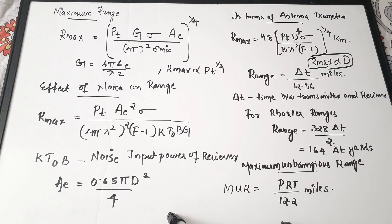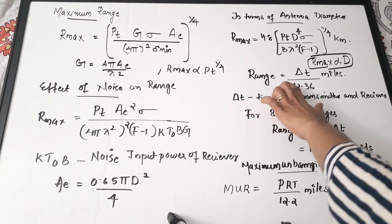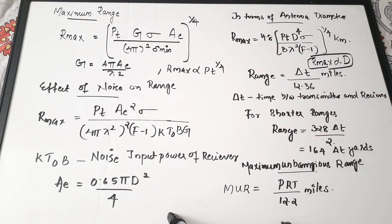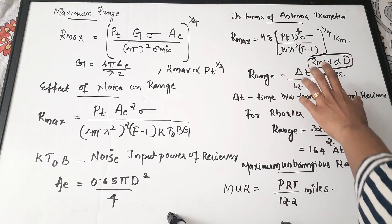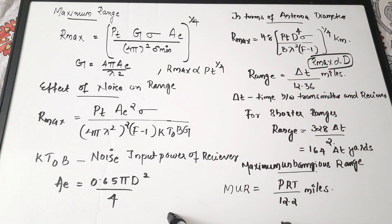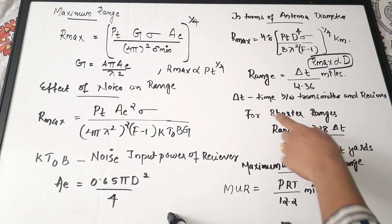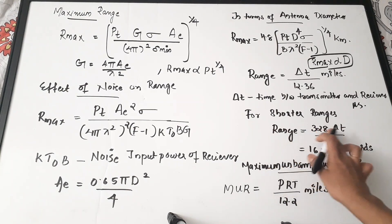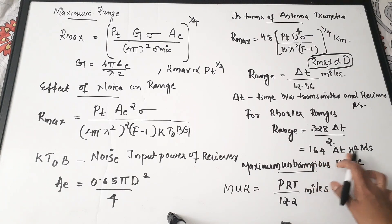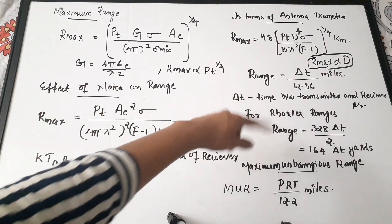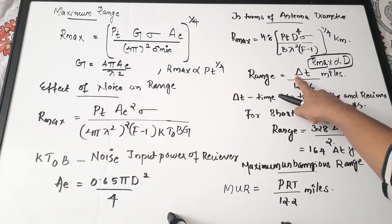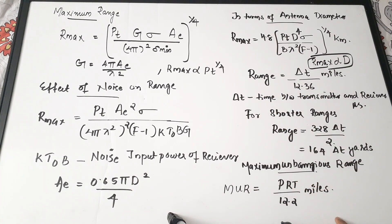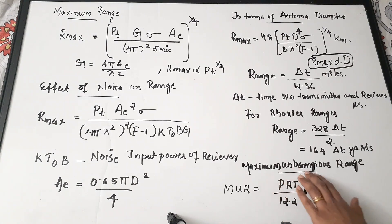In terms of time difference between transmitter and receiver, range equals ΔT divided by 12.36 miles, where ΔT is the time from transmitter to receiver in microseconds. For shorter ranges, range equals 328 × ΔT / 2, or equivalently 164 × ΔT yards. If the time between transmitter and receiver is given, these equations can be used.